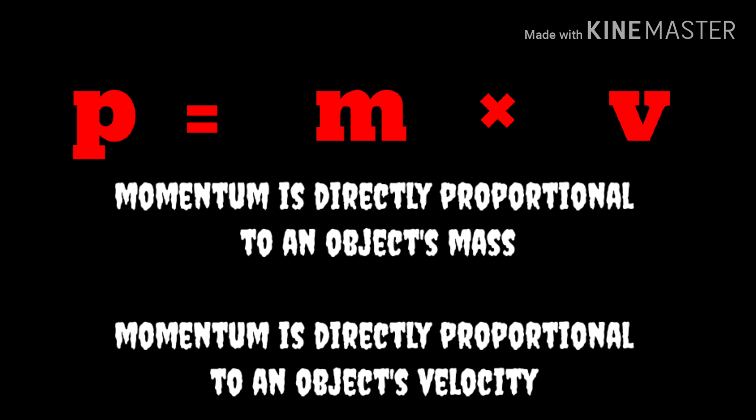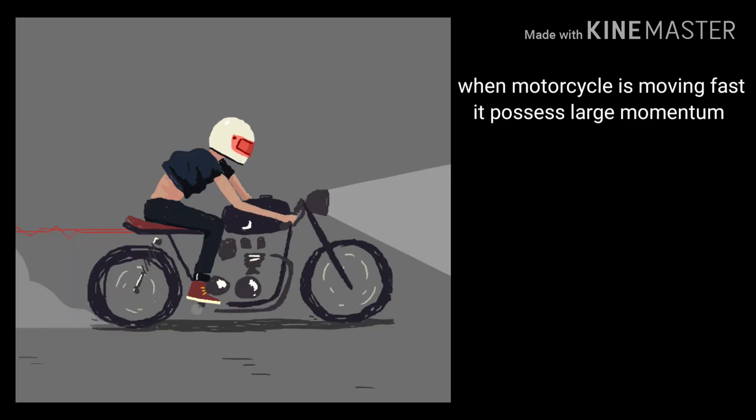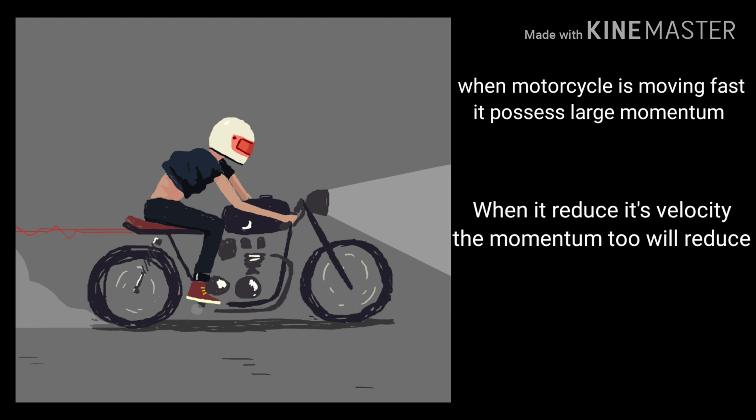In order to increase the momentum, we can increase the mass as well as the velocity of the object. Vice versa, if you want to reduce the momentum, you can reduce the mass as well as the velocity of the object.